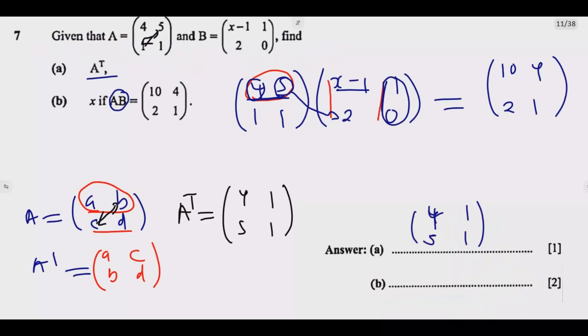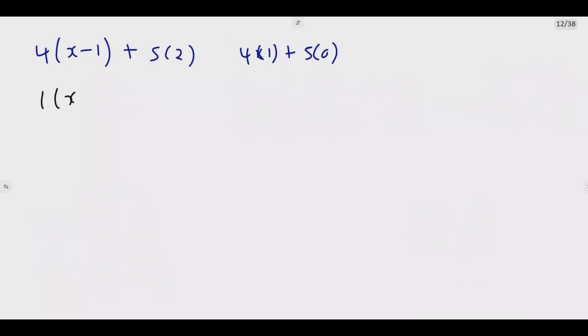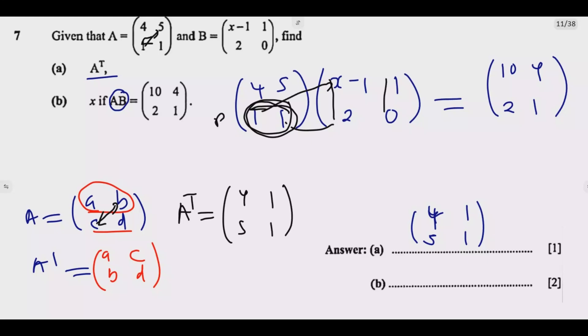Then we move to the bottom. The bottom is we multiply this by this and by that. So it will be 1 times X minus 1, then plus 1 times 2. Similarly, it will be 1 times 1, then plus 1 times 0. This is the principle we are using - row 1 by column 1, then row 1 by column 2, then row 2 by column 1, then row 2 by column 2.